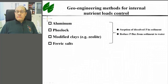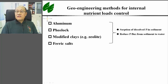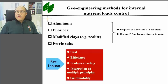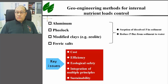Several methods have been studied for the purpose of internal phosphorus control, such as the application of aluminum, phosphorus-modified clays, and ferric salts, which will be discussed in detail by invited speakers in this session. Most of these methods follow phosphorus chemistry and use chemicals directly. Further studies in this area should consider the key issues of cost, efficiency, ecological safety, integration of multiple principles, and sustainability. To solve these bottleneck problems, a breakthrough in technical principles is often critical.